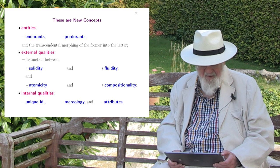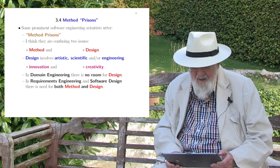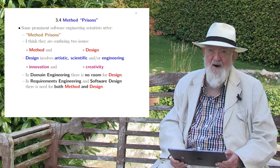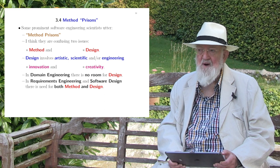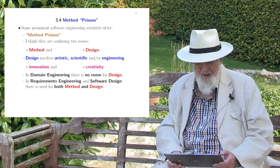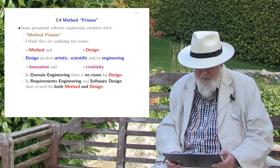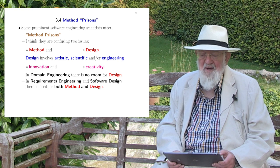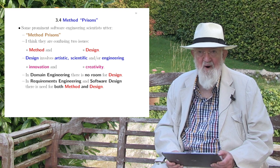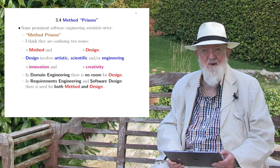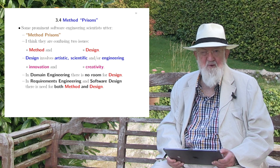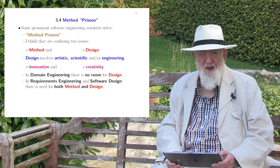Ladies and gentlemen, these are new concepts: the entities, the external qualities, the internal qualities. In the fourth part, I cover a current term called method presence. Some prominent software engineering scientists utter method presence — I think they are confusing two issues: method and design. Design involves artistic, scientific, and/or engineering innovation and creativity. In describing a domain, we need not be creative or innovative; we must be like physicists and accept the world as it is. So in domain engineering, there is no room for design. In requirements engineering, there is a lot of room for both method and design.